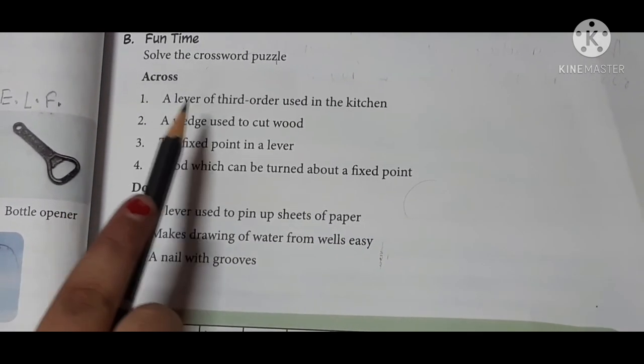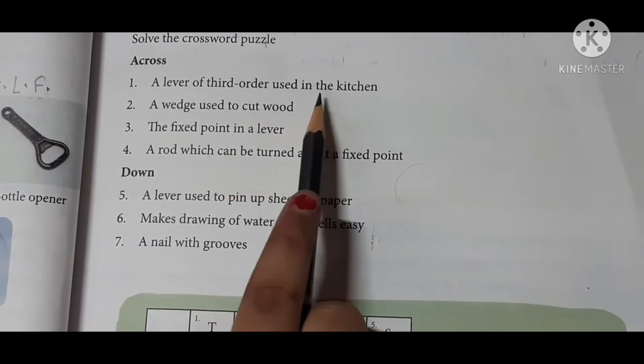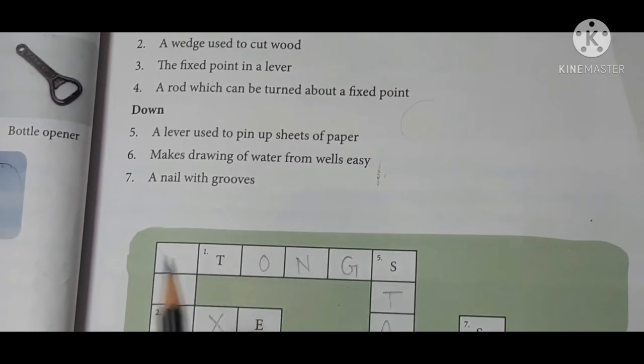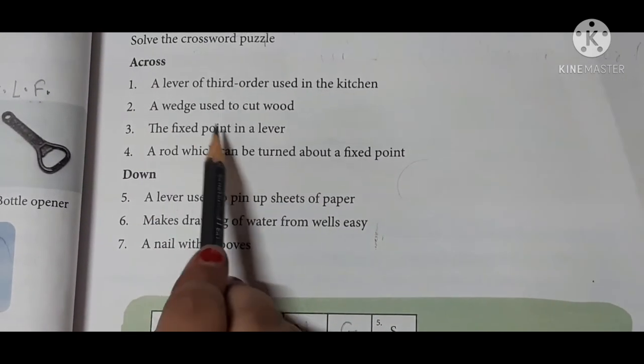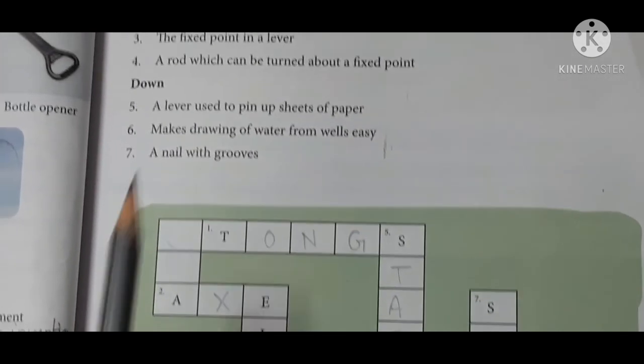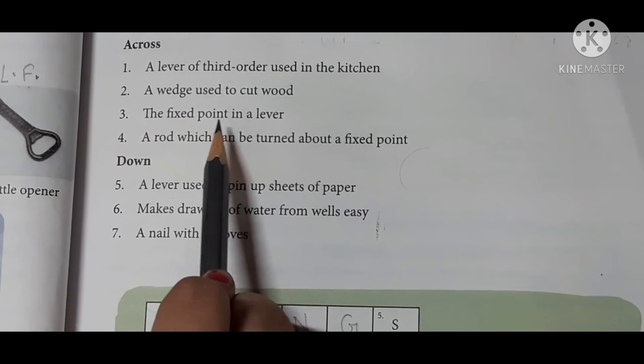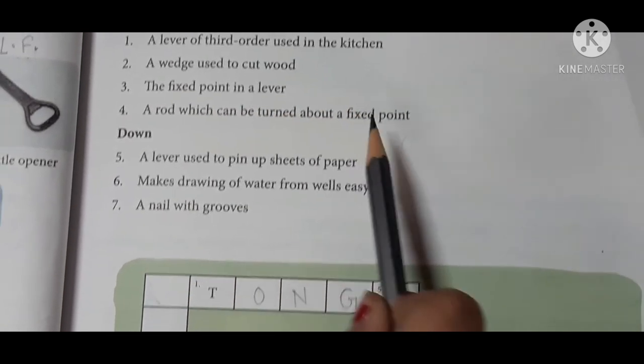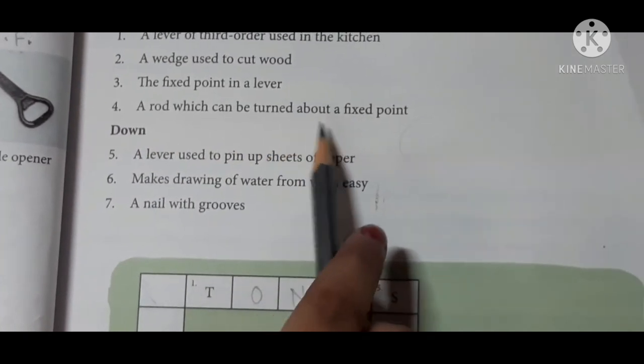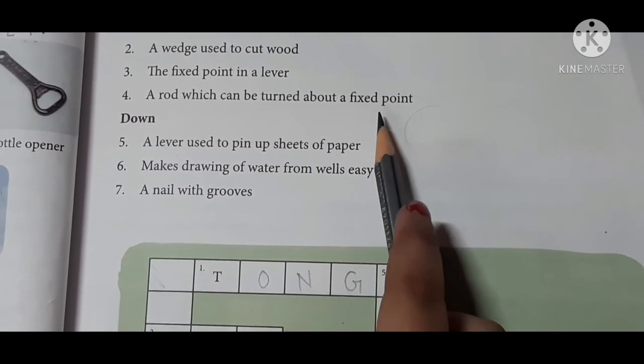Across. First, a lever of third order used in the kitchen. Tongs. Second, a wedge used to cut wood. Axe. Third, the fixed point in a lever. Fulcrum. Fourth, a rod which can be turned about a fixed point. Lever.